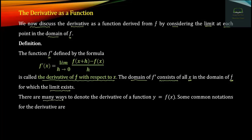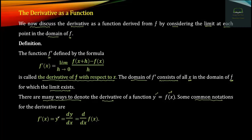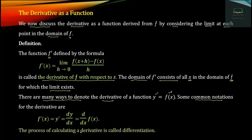There are many ways to denote the derivative of a function. The notation — the Leibniz notation — is the formula. The process of calculating a derivative is called differentiation. The difference between differentiation and the result is the derivative.